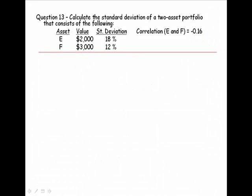Let's try another one. Calculate the standard deviation of this two-asset portfolio that consists of the following. Here we don't have the percentages, but we're given the values, the dollar values, and we're given that the correlation between the two assets is negative 0.16. First thing we need to do is calculate the weights, because we don't have the weights, the percentage weights.